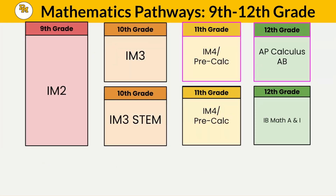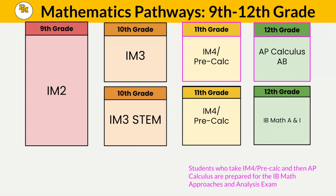Students who enter Delmar High School in Integrated Math 2 in ninth grade, then in tenth grade, have the option of taking IM3 or IM3 STEM. Students who take IM4 Pre-Calculus in eleventh grade followed by AP Calculus AB in twelfth grade are again prepared to take the IB Math Approaches and Analysis exam at the end of their twelfth grade year.